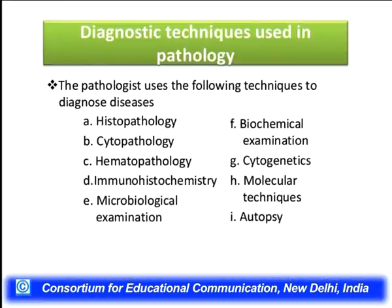I will focus upon various techniques such as immunohistochemistry, lab techniques, PET scan, biopsies and other techniques, and then show how exactly these results are interpreted. Diagnostic techniques used in pathology have been broadly classified into various sections such as histopathology, cytopathology, hematopathology, immunohistochemistry, microbiological examination, biochemical examination, cytogenetics, molecular techniques and autopsy.